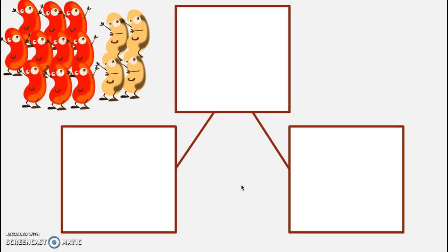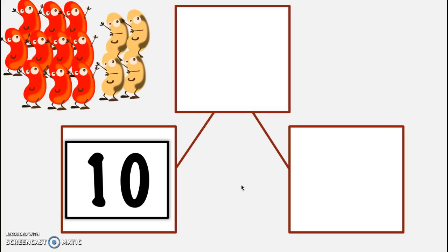Okay. What I would like you to do is we're going to fill in that number bond. I'm going to start with one of the parts. I know that there are 10 red beans, so let's go ahead and in one of our parts write the number 10. Go ahead and do it on your dry erase board.